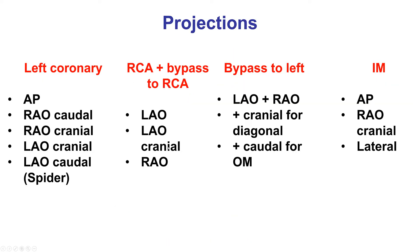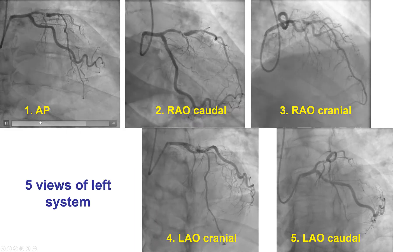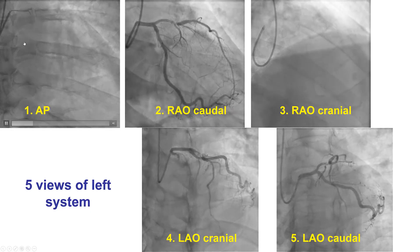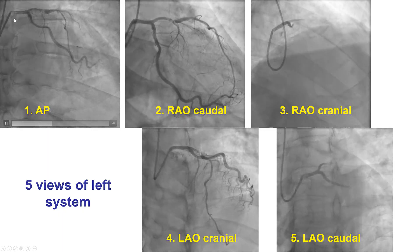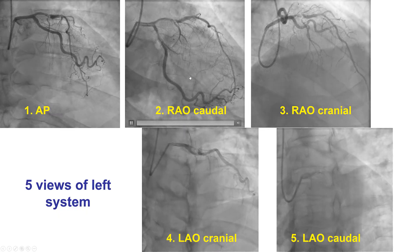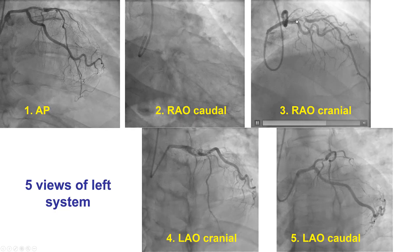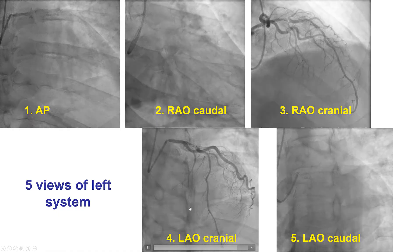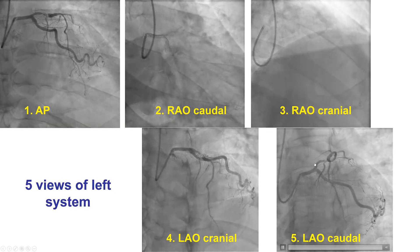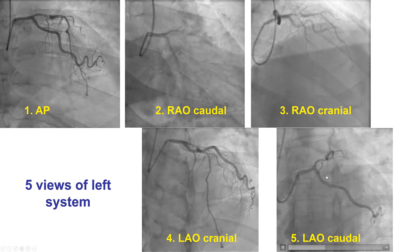Which projections to use? Every operator has their own preferences, but these are the ones commonly used in our practice: five projections for the left coronary, three for the right, two for bypasses to the left, and two or three for the internal mammary grafts. Specifically for the left coronary, five projections are performed in sequence in every patient: first, an anterior-posterior projection good for visualizing the left main; second, an RAO caudal that opens up the circumflex and obtuse marginals; third, the RAO cranial for good visualization of the LAD; fourth, the LAO cranial for good visualization of the LAD and diagonals; and finally, the LAO caudal, or spider view, good for visualizing the left main bifurcation, the circumflex, and the proximal LAD.